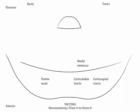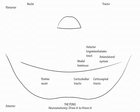Next, show the anterolateral system lateral to the medial lemniscus. Internal to them both, draw the anterior trigeminothalamic tract. The posterior trigeminothalamic tract fibers only first bundle in the midbrain and are not found in our cross section of the pons.